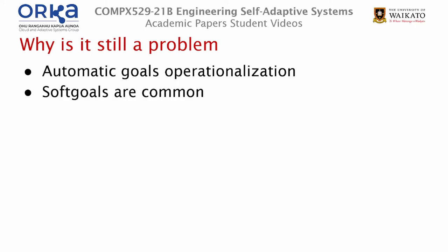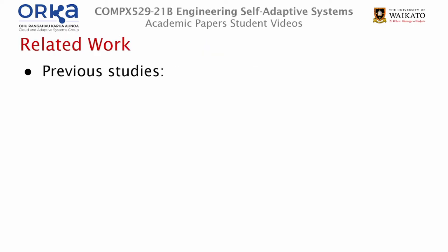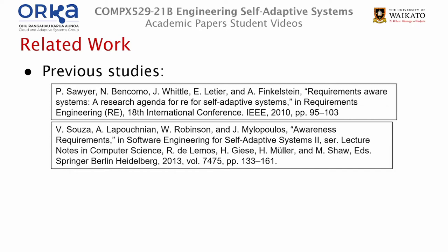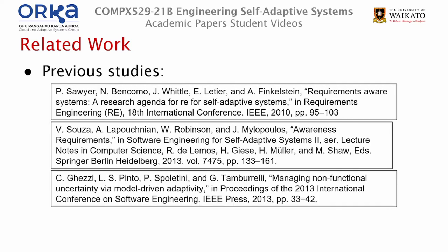Soft goals can be found in many areas where an autonomic system may exist, as there are often NFRs related to user interface, for example. A solution to this problem really is needed. In the early 2010s there were a few papers published focused on this issue. The first mainly addressed the need for systems that adapt to changing requirements, termed requirements-aware systems. The second touches on awareness requirements — requirements which specify the runtime behaviour of other requirements. The third introduces the idea behind current soft goal adaptation, which is to evaluate possible system changes and decide on one which is good enough.